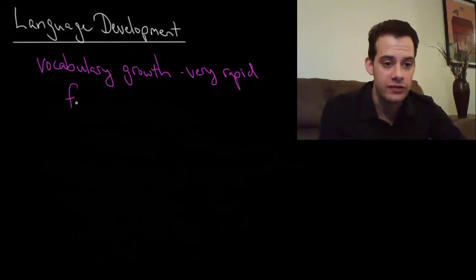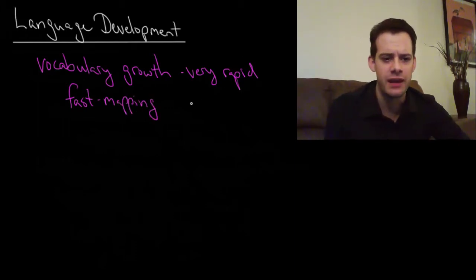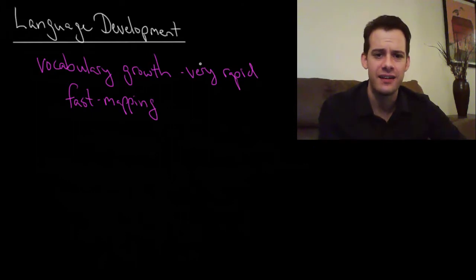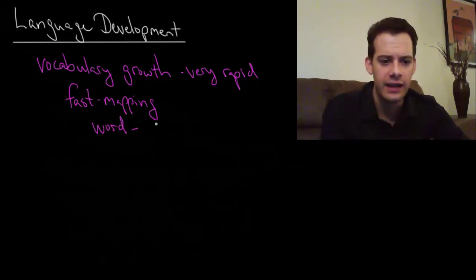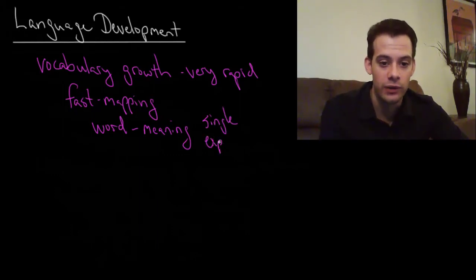One way that this occurs is what's called fast mapping. Fast mapping refers to the idea that young children are able to connect the sounds of a particular word with the meaning of that word after just a single exposure. So we have this arbitrary pattern of sounds that make up the word and that gets connected to the meaning of the word and this can happen just from hearing the word once.